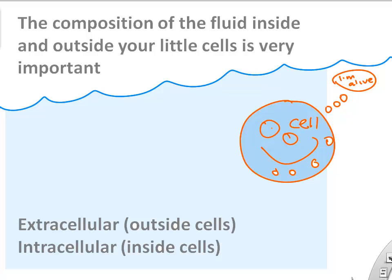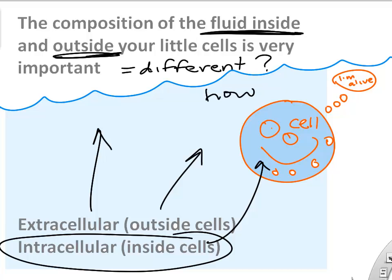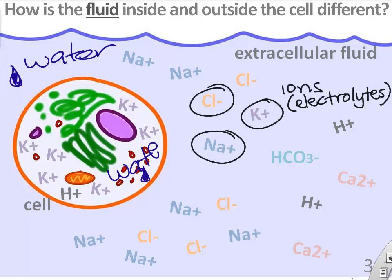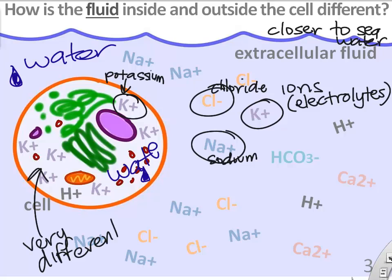An important thing to remember is that the water and fluid composition inside your cells is different from the fluid composition outside your cells. Extracellular refers to outside the cells; intracellular refers to inside the cells. We find a lot of potassium inside our cells, whereas we find a lot of sodium chloride outside our cells — outside our cells is closer to seawater.